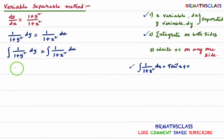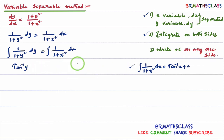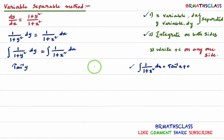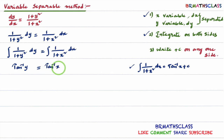The integral of 1/(1 + y²) dy is tan⁻¹y. When doing integration, we need to write an arbitrary constant +c. To avoid confusion, I write +c on one side only — always on the right-hand side — because both sides have arbitrary constants that are different. So the result is: tan⁻¹y = tan⁻¹x + c.